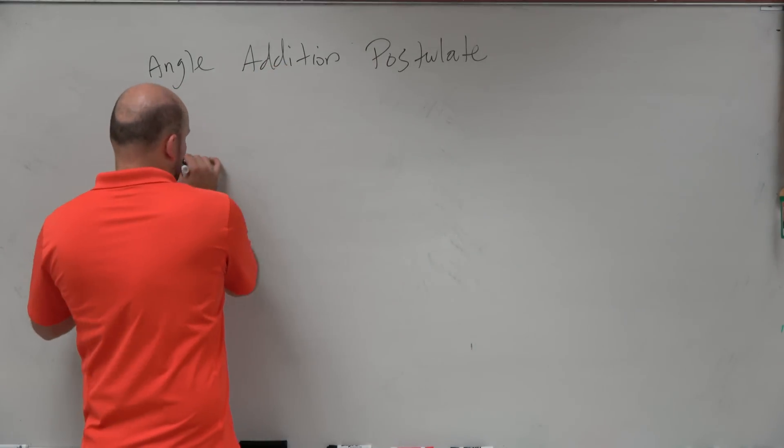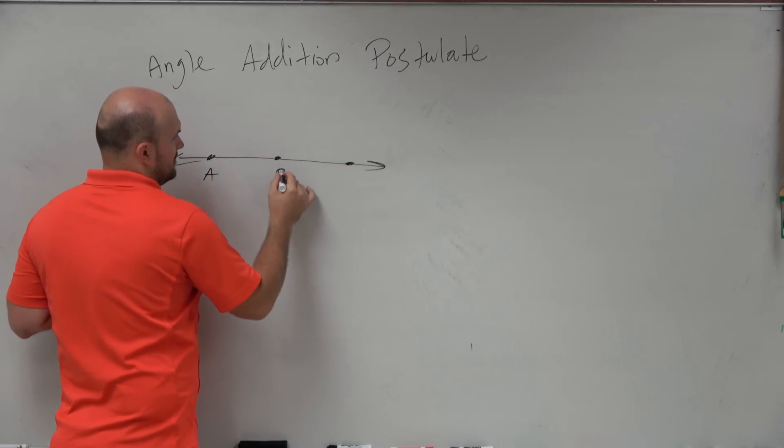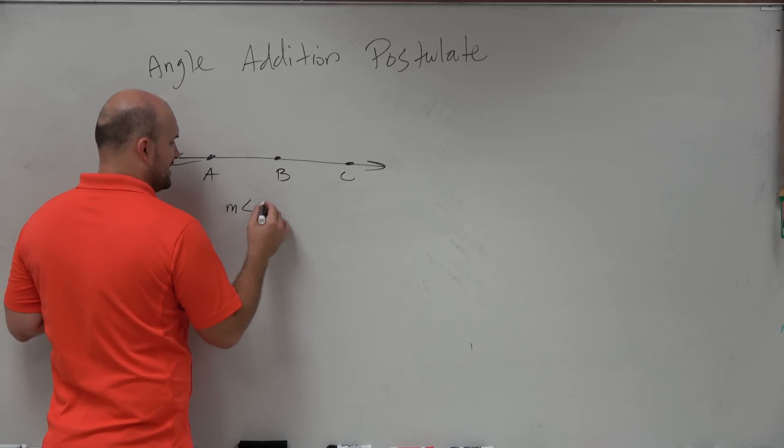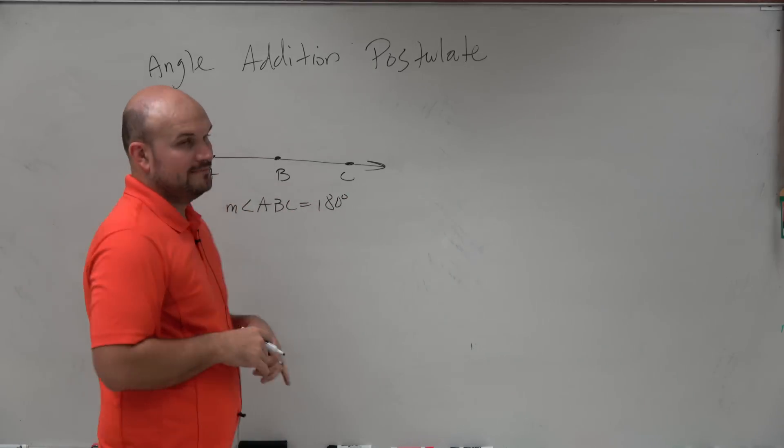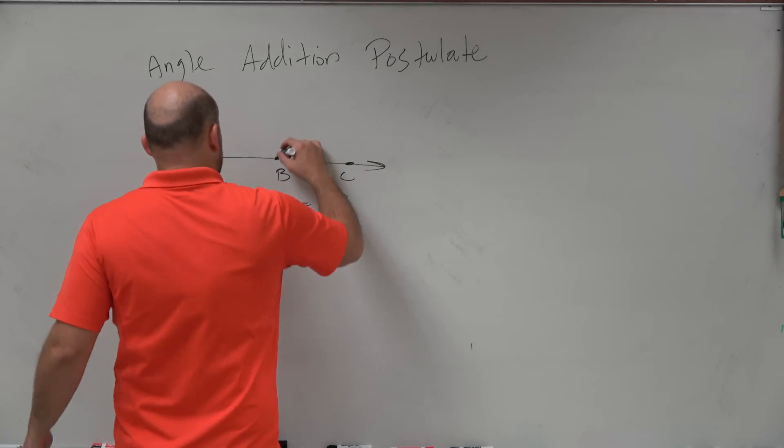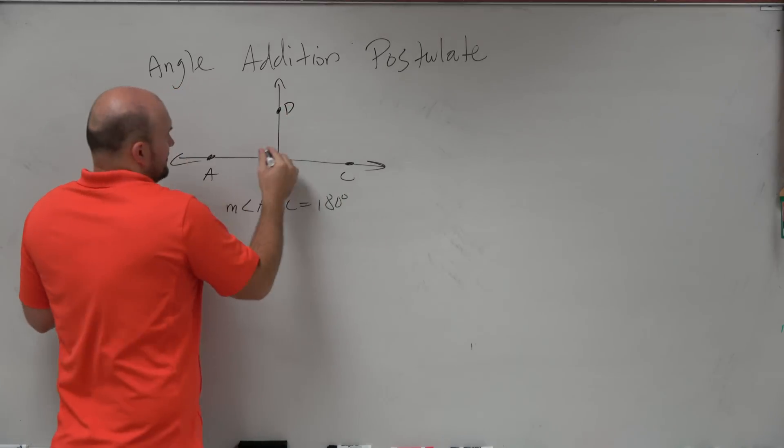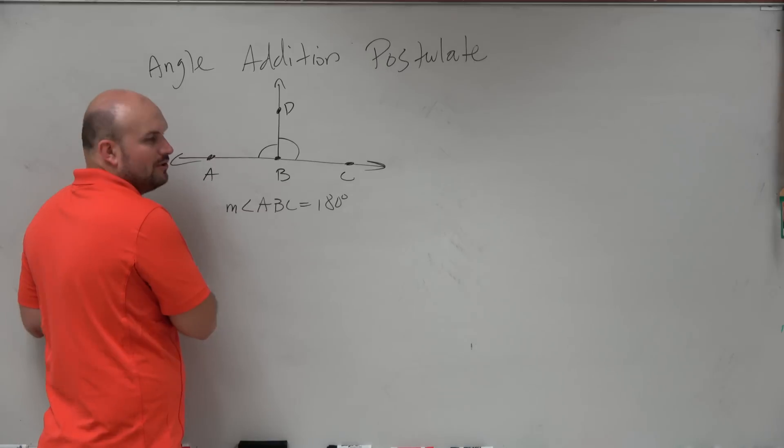So first of all, let's kind of go back to a straight angle. We know a straight angle is going to equal, let's give this an ABC. So we know that the measure of a straight angle ABC is equal to 180 degrees. Now, no matter how much I cut that up, if I take another line and I break that up, it doesn't matter. We still know that the sum of these two angles is still going to add up to 180 degrees.